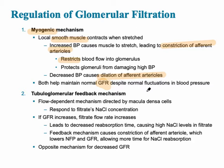The second mechanism is tubuloglomerular feedback. It's a feedback loop between two parts of the nephron: the renal tubule — which includes the PCT, the loop of Henle, and the DCT — as well as the glomerulus. There is a communication between the two directed by specialized cells called the macula densa cells.